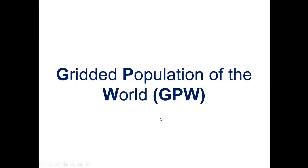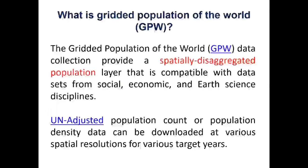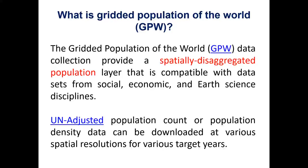First I'm going to talk about the gridded population of the world. GPW depicts the distribution of human population across the globe. The basic inputs for GPW are population data and administrative boundaries from world censuses. What GPW provides is a spatially disaggregated population layer that is compatible with several disciplines.